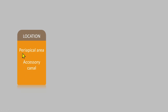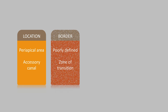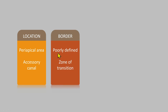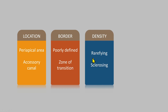Because it is an apical periodontitis, most of the time the lesion will be around the periapical region. Unless there is an accessory canal, the lesion may be on the mesial, distal, buccal, or palatal aspect. The border of the lesion is usually poorly defined with a zone of transition.